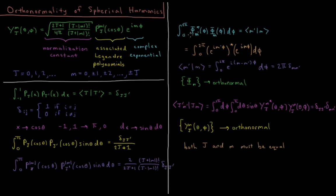For the phi part, that's an integral from 0 to 2pi. We have phi star_m'(phi) times phi_m(phi) with respect to phi, or the Dirac bracket m' m. The complex conjugate matters here because we have an i in the exponent. This is the integral from 0 to 2pi of e^(im'phi)* times e^(im phi) d phi, which equals the integral from 0 to 2pi of e^(i(m minus m')phi) d phi, giving us 2pi times delta_mm'.